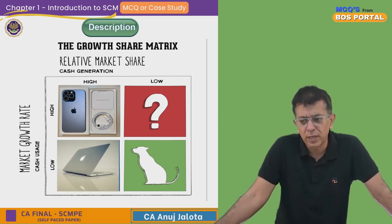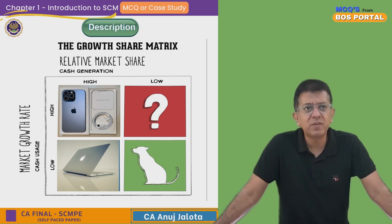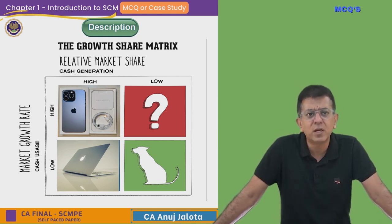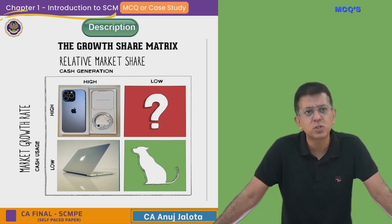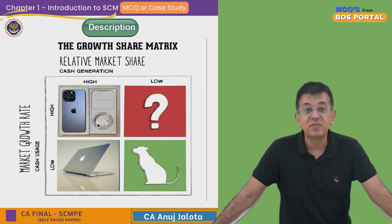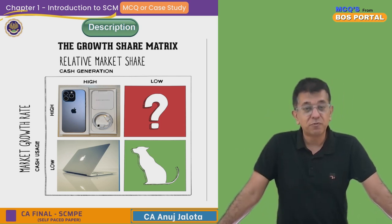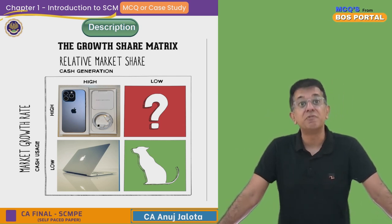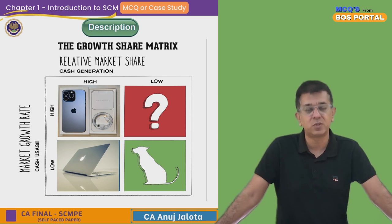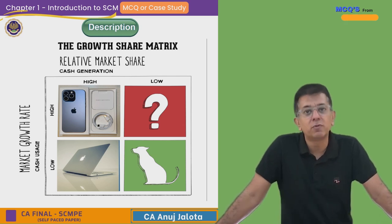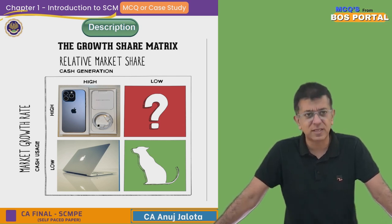Another Cash Cow example could be the iPad. If you think about it, the growth rate of MacBooks and laptops has not increased much — it's quite low. But MacBooks have a relatively high market share in the premium segment. Similarly, the iPad has a very high market share in the premium tablets segment, but the growth rate of these products is falling and not increasing much.